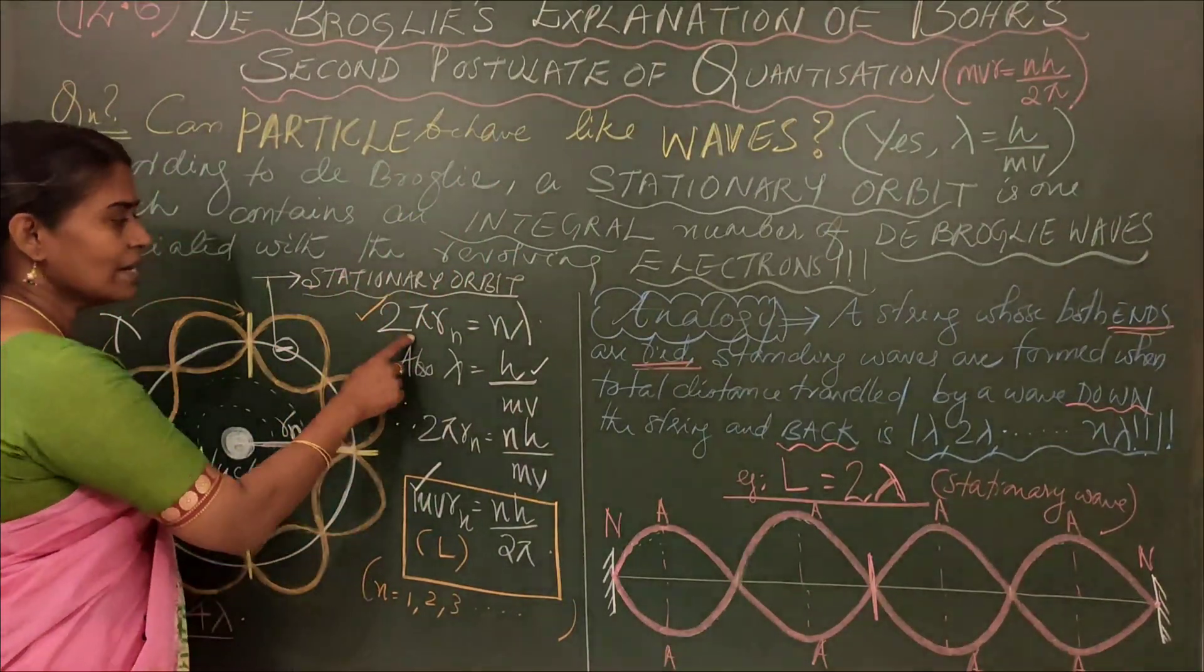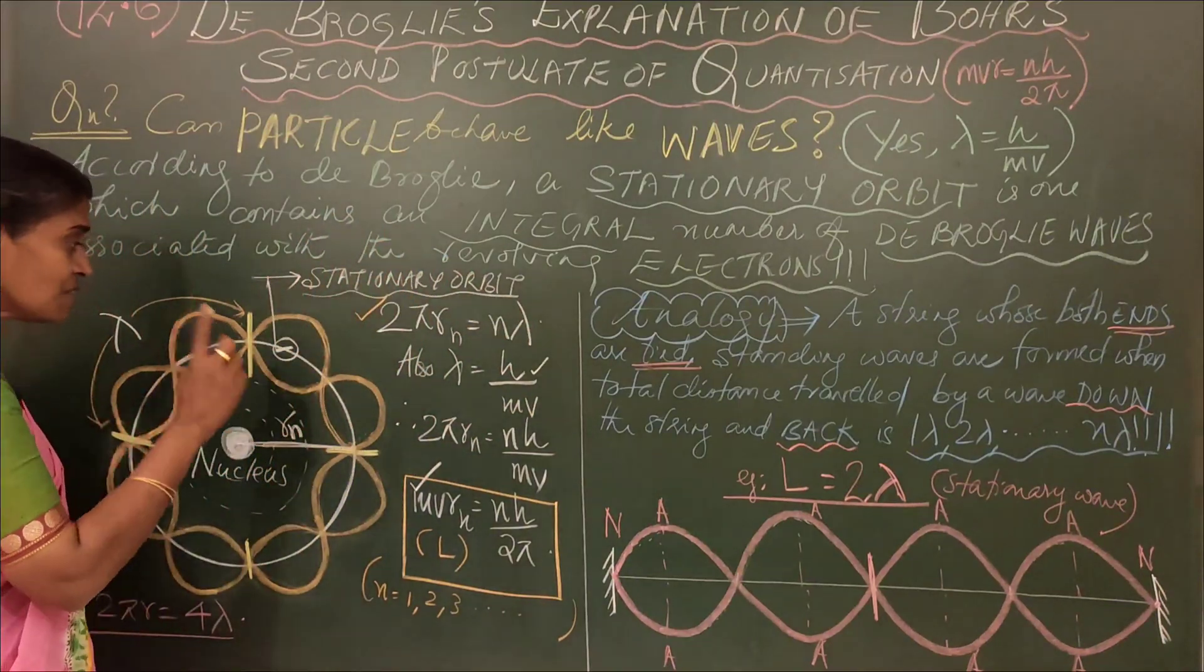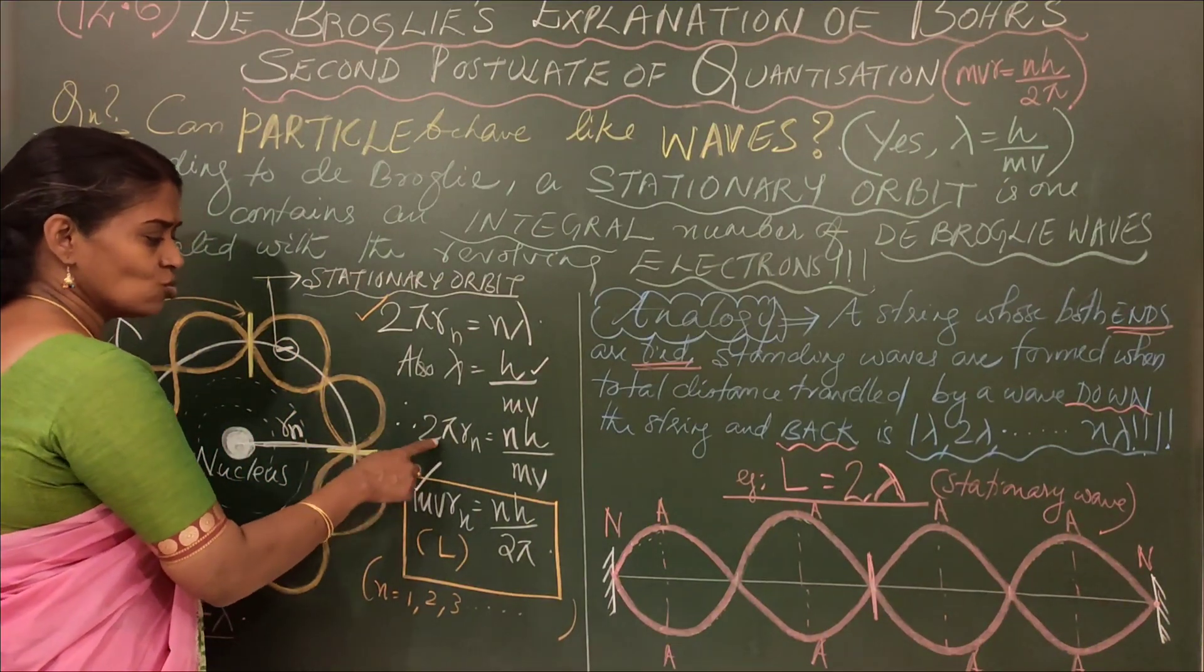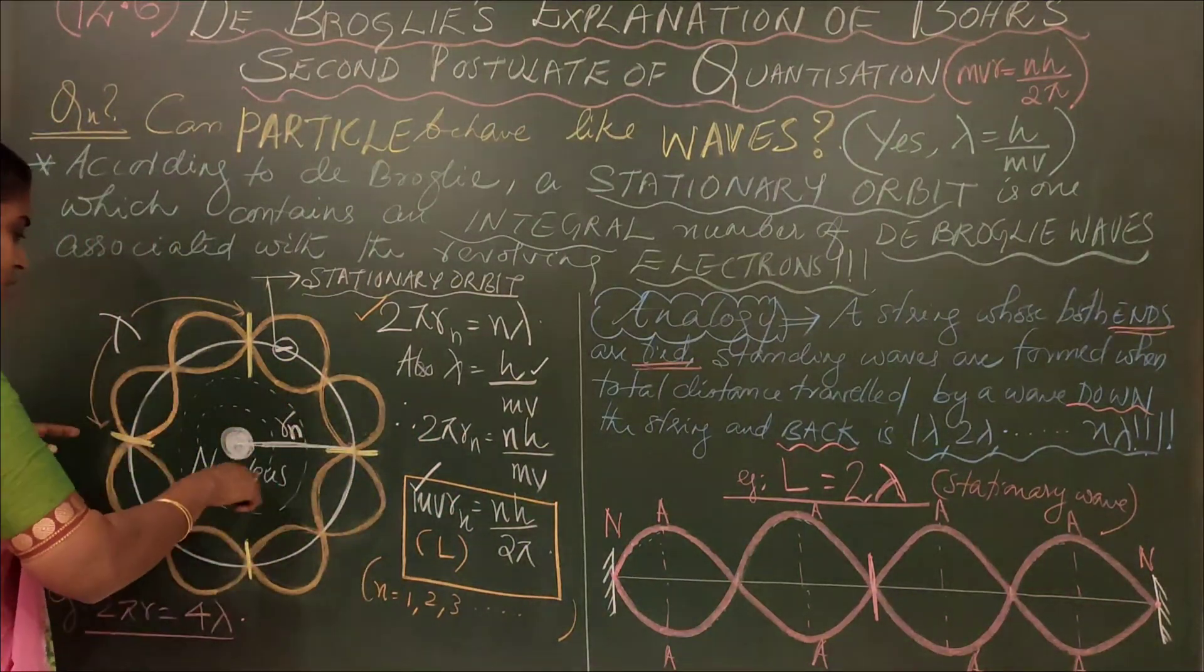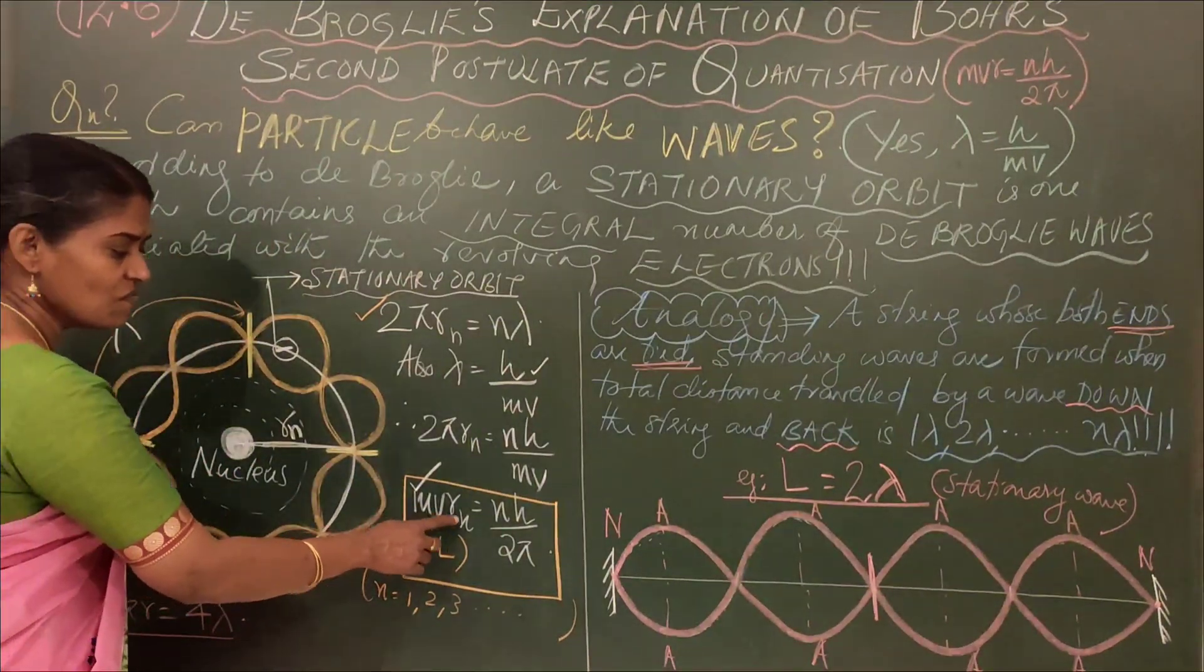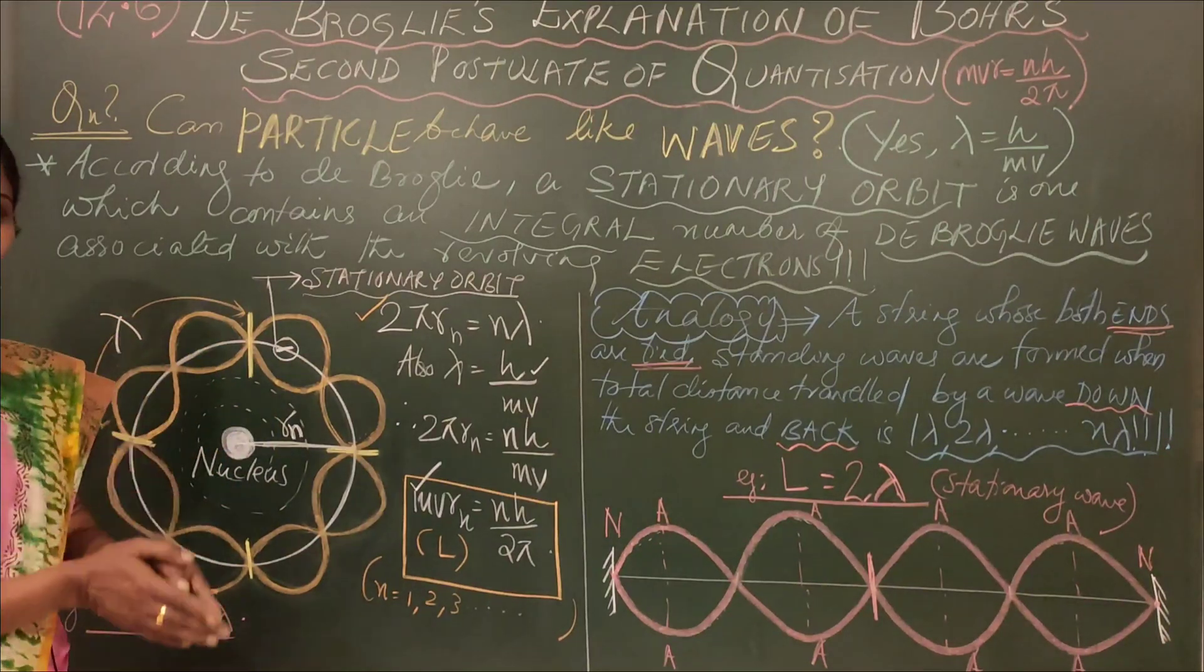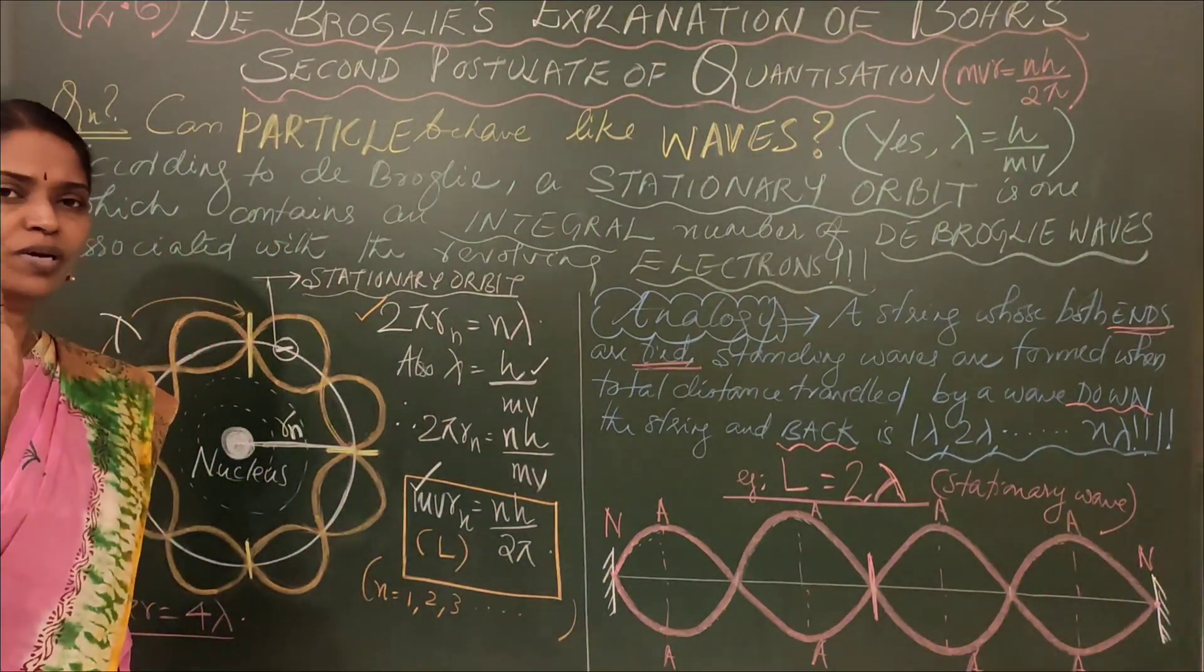If 2πrn is the nth stationary orbit, that total length should be an integral multiple of de Broglie wavelength. If electron is a particle, you could prove it simply by substituting lambda as h/mv. We get 2πrn = nh/mv. Rearranging, we get mvrn = nh/2π, where n is a positive integer. No intermediate values are possible. That's why we say it is quantized.